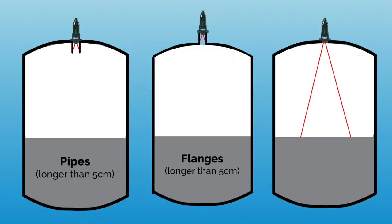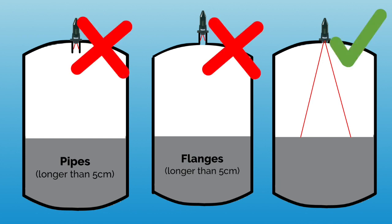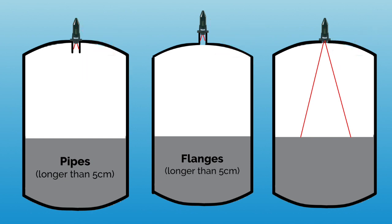First of all, make sure that you haven't installed the sensor on pipes or flanges longer than 5 centimeters, but instead the ultrasonic waves of the sensor have unobstructed reach into your tank.